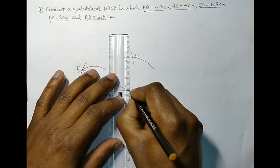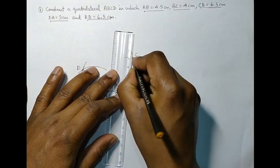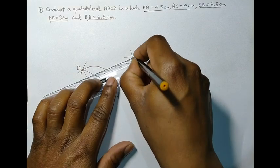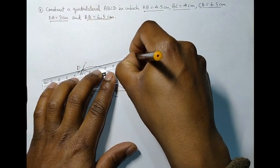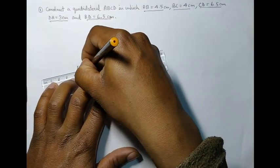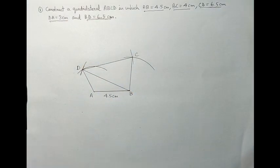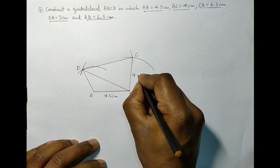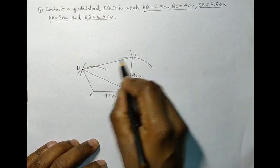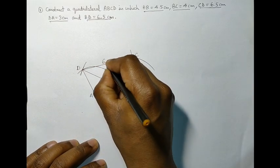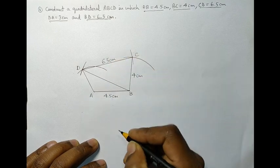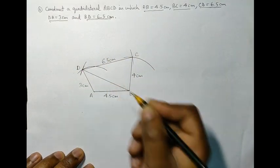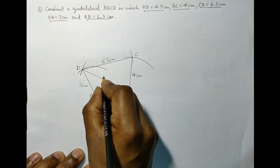Now, simply join these points, and we have our required quadrilateral. So, the measurement of BC is 4 cm, DC is given to be 6.5 cm, AD is 3 cm, and BD is also 6.5 cm.